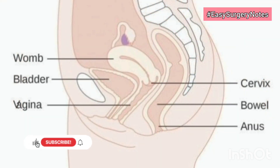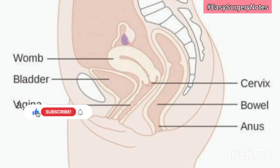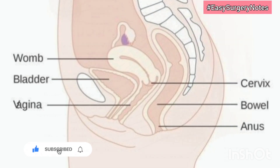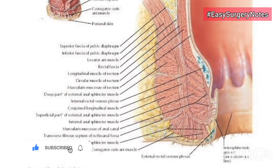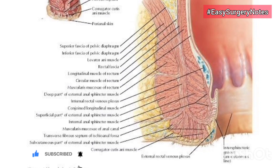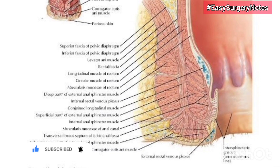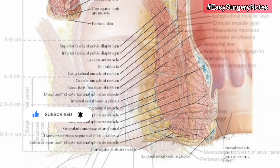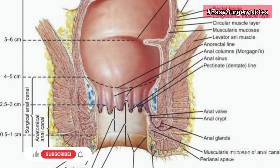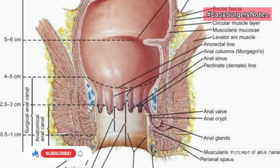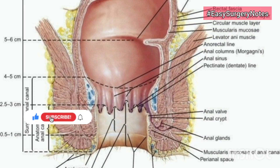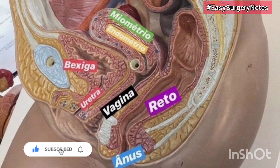Surgical spaces related to the anal canal: the ischio-rectal space on each side of the anal canal; the perianal space surrounds the anal canal below the white line; the submucous space lies above the white line between the mucous membrane and the internal sphincter.